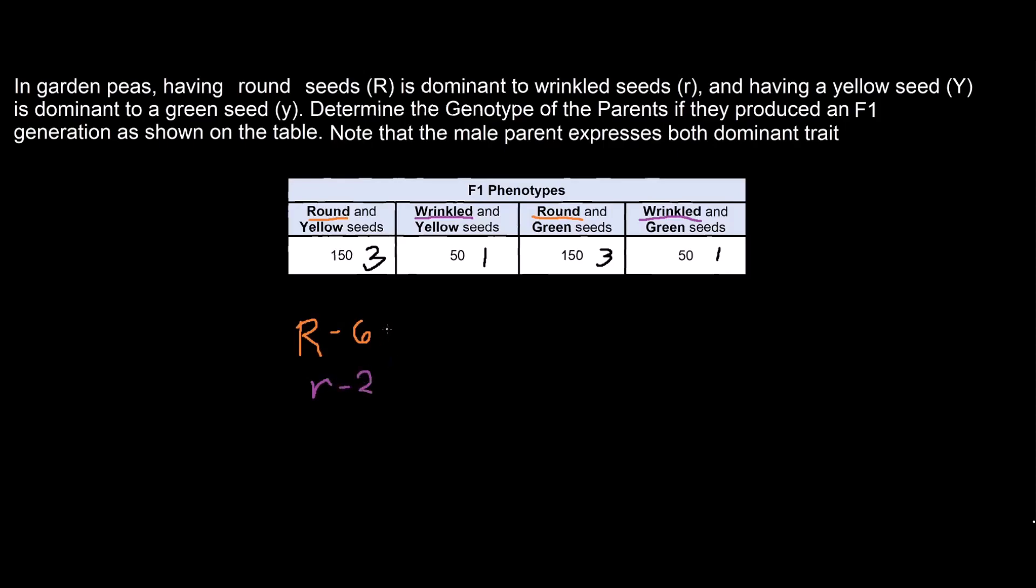We can simplify them more by dividing both by 2. So we have 3 and 1. And that ratio seems to be familiar which is 3 is to 1.